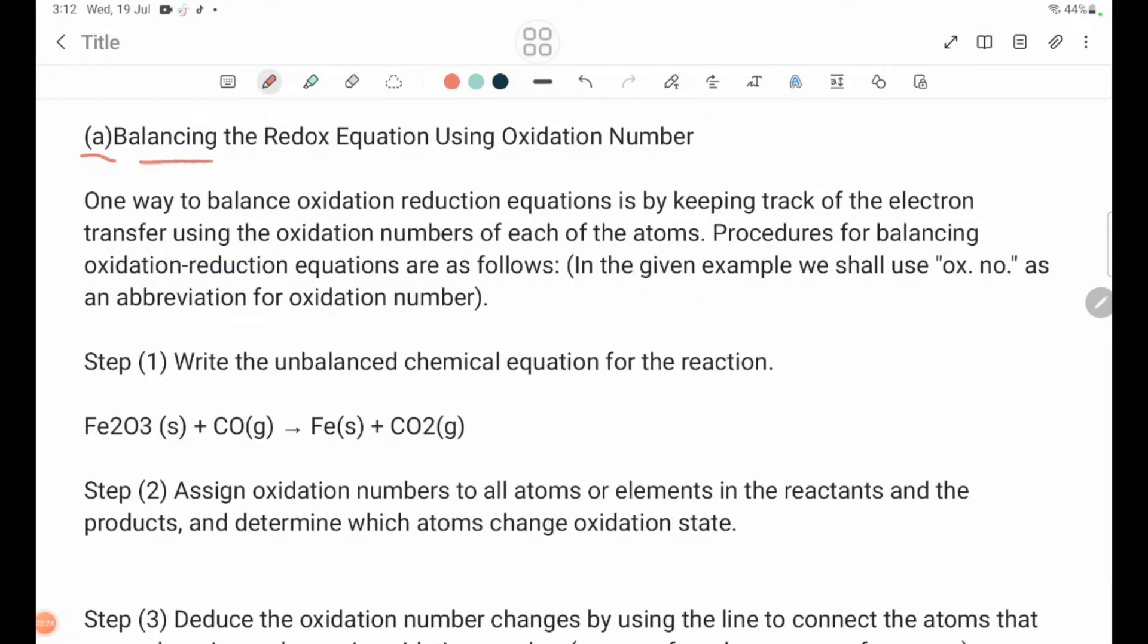One way to balance Oxidation Reduction Equations is by keeping track of the electron transfer using the oxidation numbers of each of the atoms.